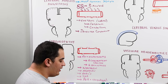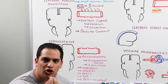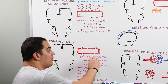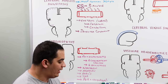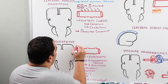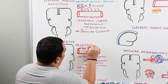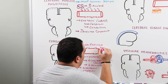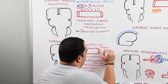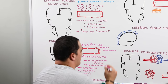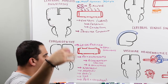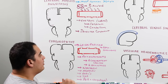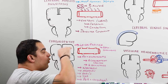Coagulopathy can also result from cirrhosis or acute or chronic liver failure, where the liver cannot produce pro-coagulant proteins — factors 2, 7, 9, 10, protein C, and protein S — leading to decreased hemostasis and potential hemorrhage.